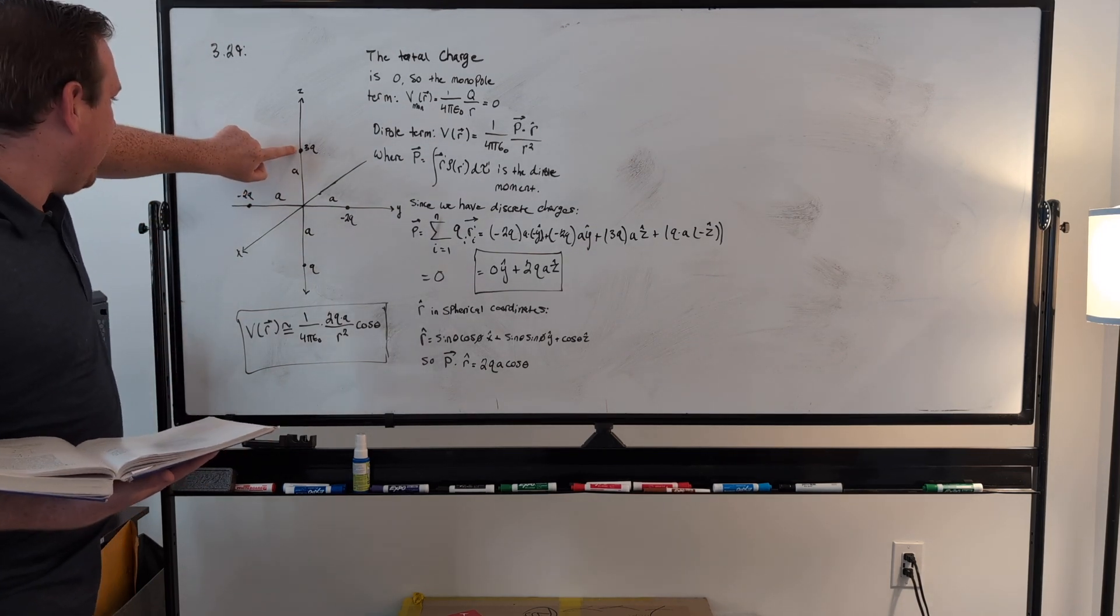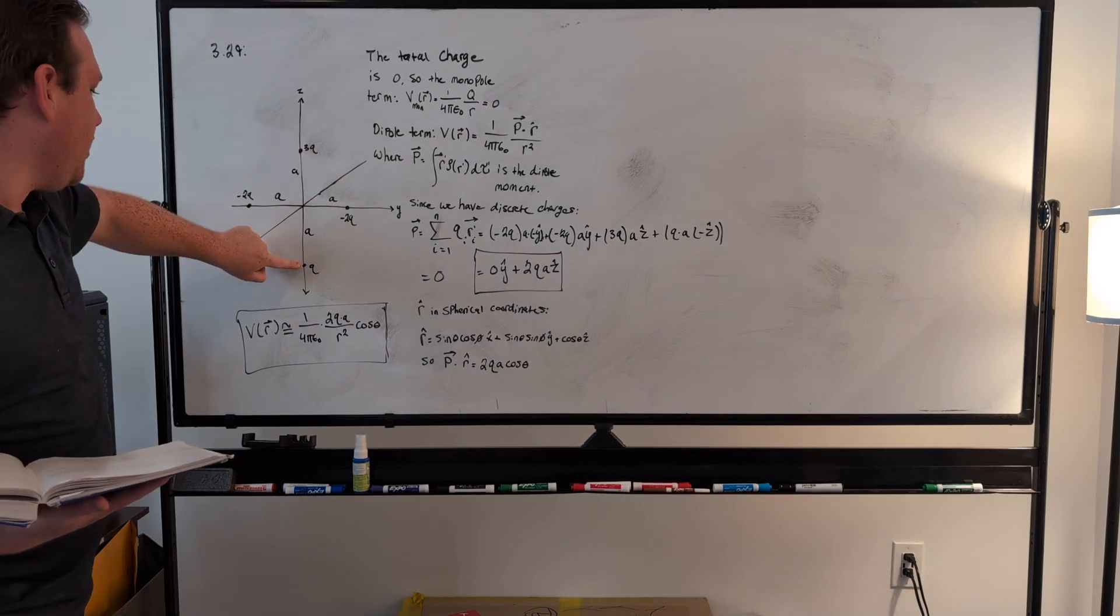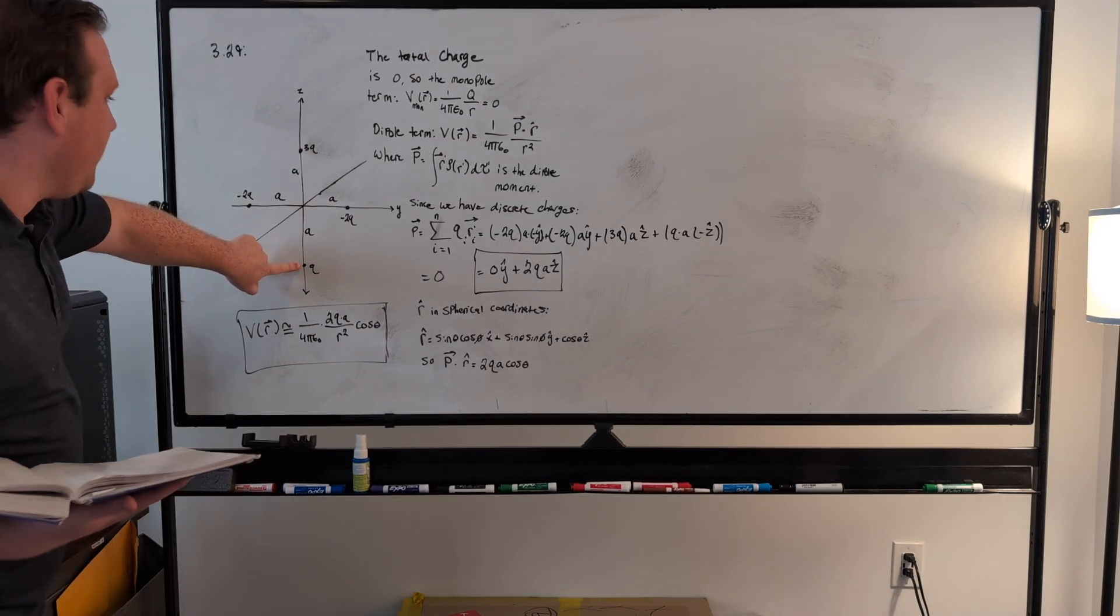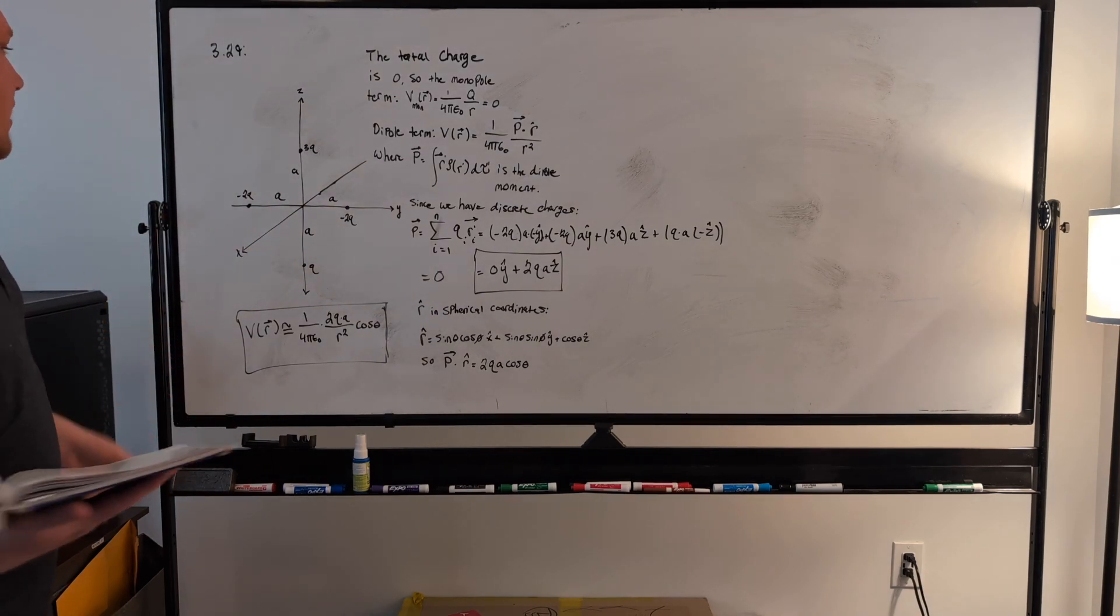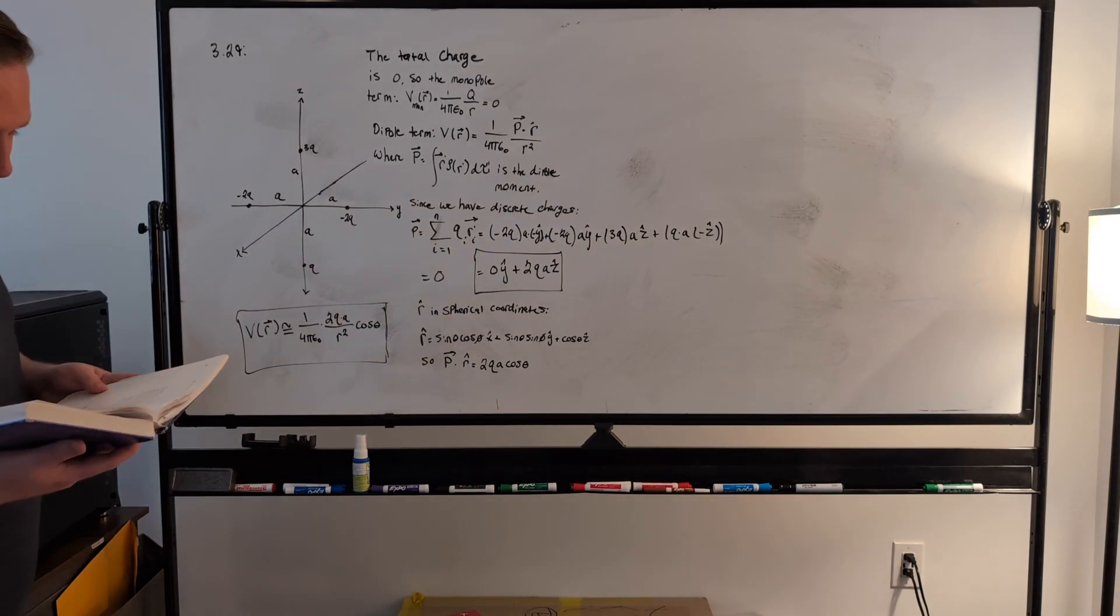Then we have a charge of 3q here on the positive z side, and then a charge of q on the minus z side of the axis, also a distance a away. So everything is equidistant away from the origin, like this.